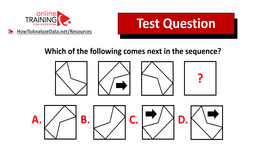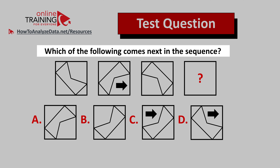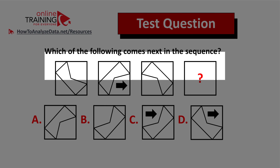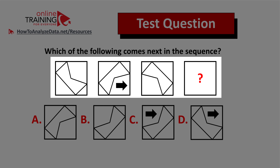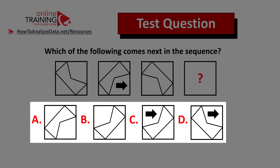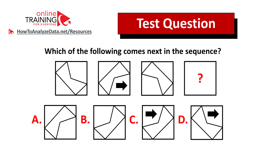Here is a question you can try to solve on your own: which of the following comes next in the sequence? You are presented with four different squares, and each square has another figure inside. There are four possible choices: A, B, C, and D. Now might be a good time to pause this video and give yourself 10 to 15 seconds. One tip for you: always look for patterns. If you've figured out the answer, feel free to post it in the comment section along with your rationale so I can give you my feedback.